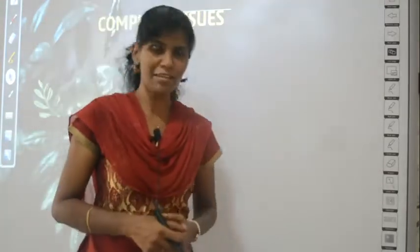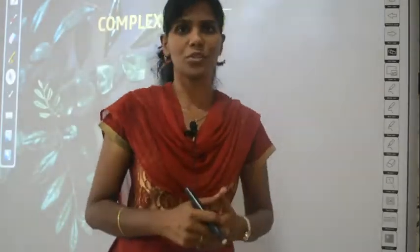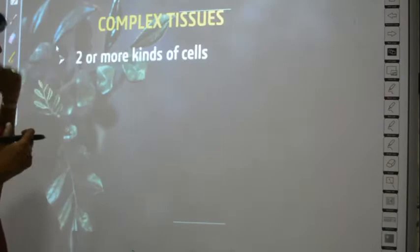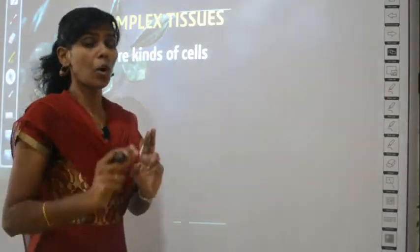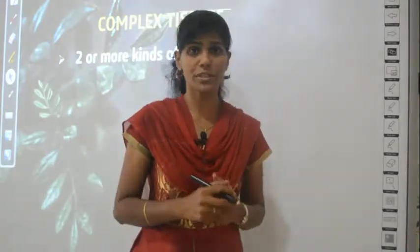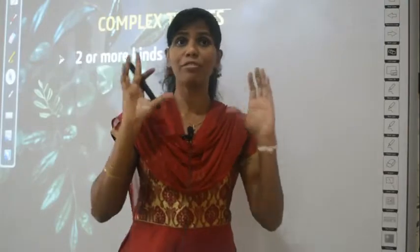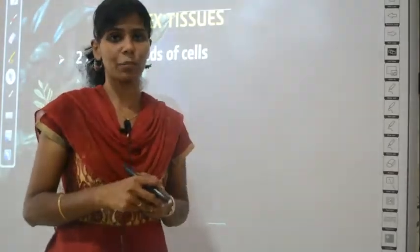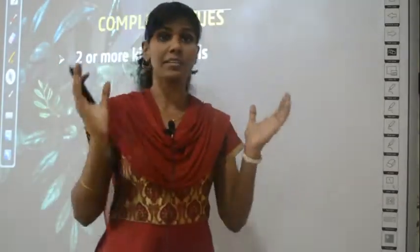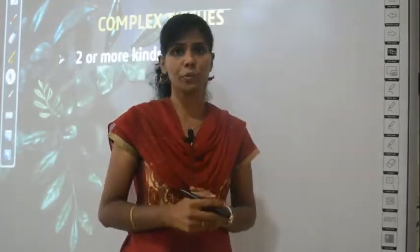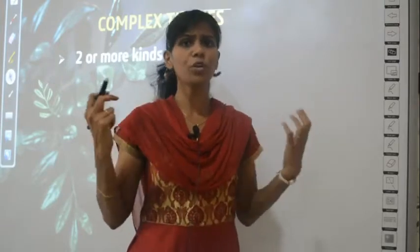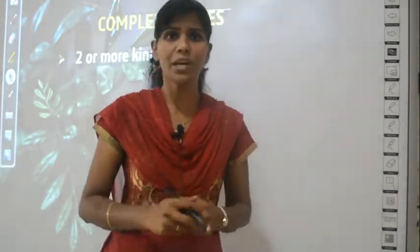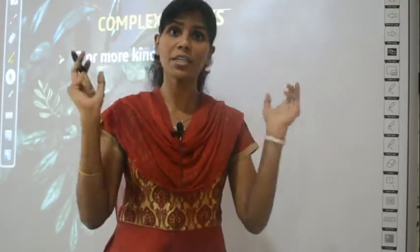The word 'complex' itself says that it is a complicated structure — not simple, but complicated. It is called complex because it is made up of more than one type of cells. In simple tissues, like chlorenchyma, you have only one type of cell. But in complex tissues there will be two or three types of cells within the same tissue, all doing the same function.